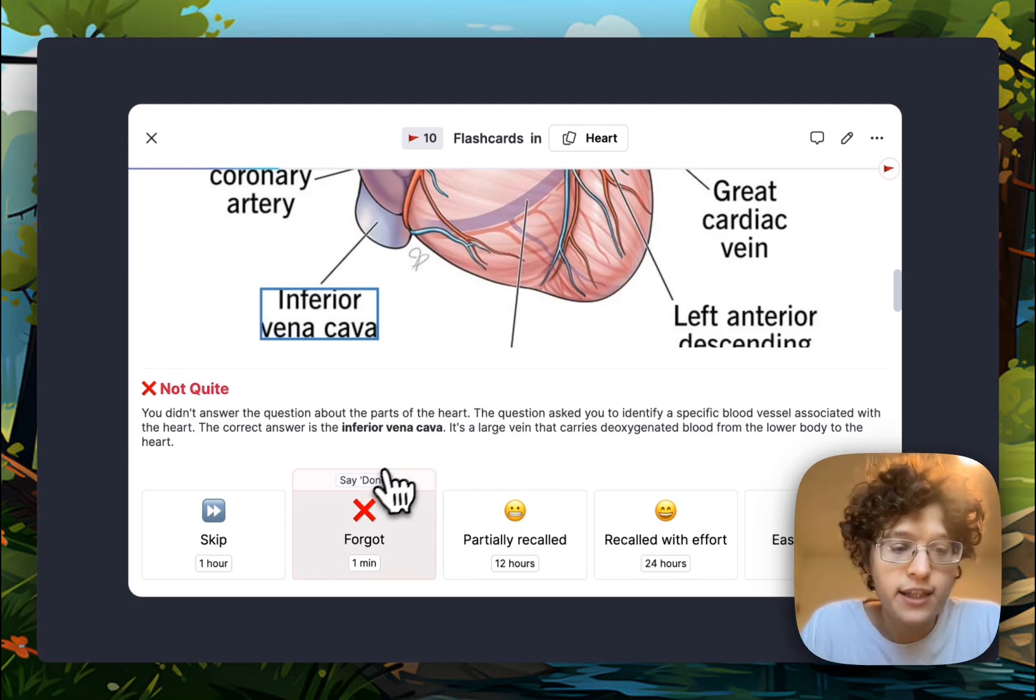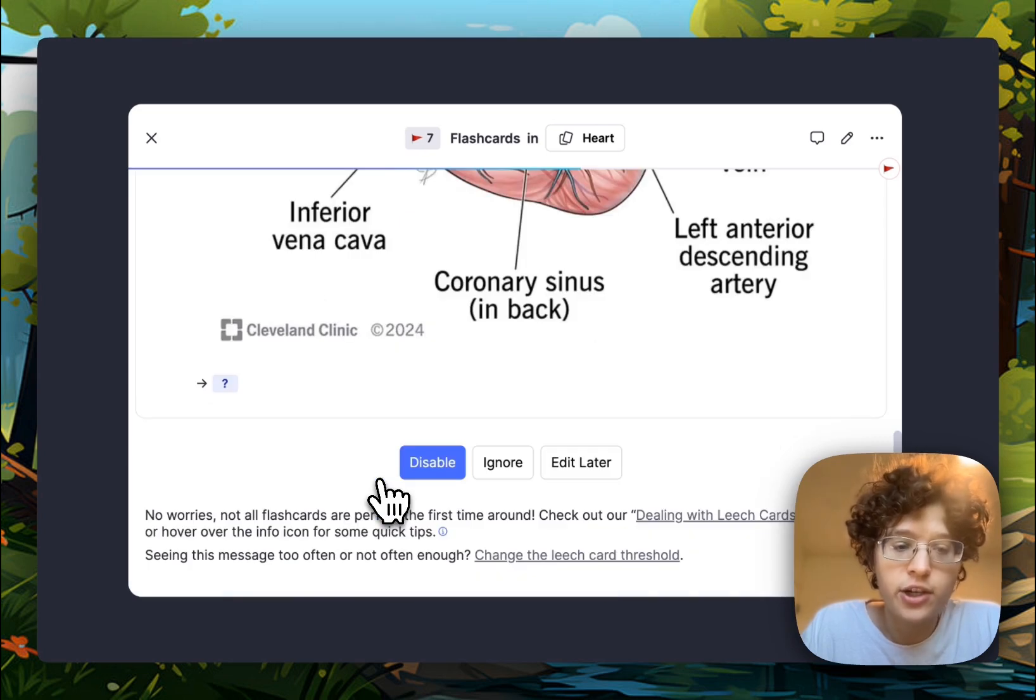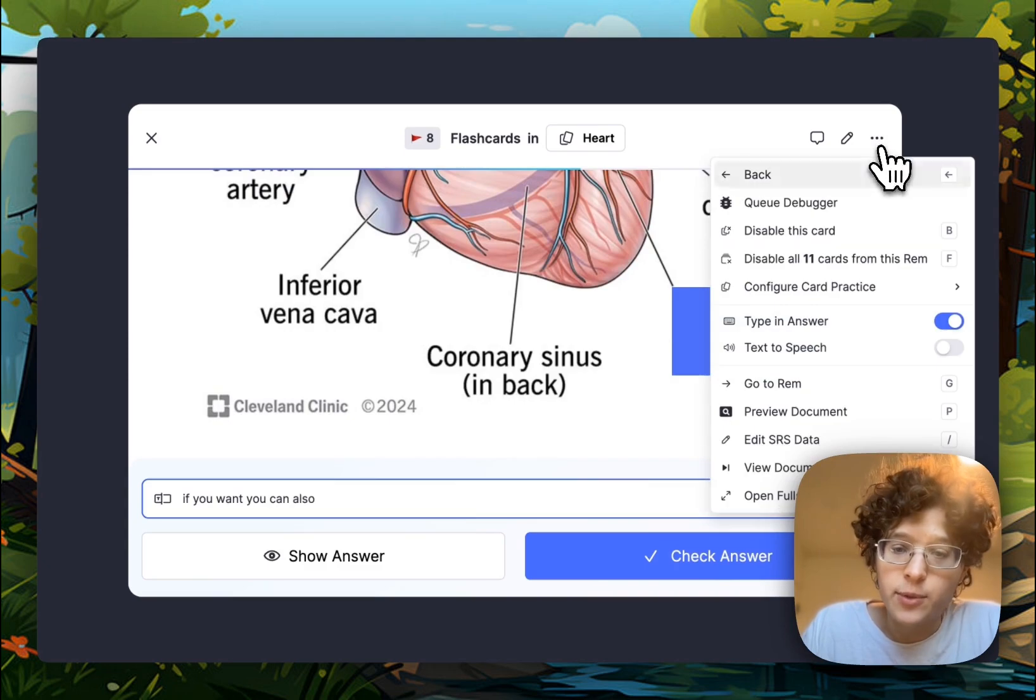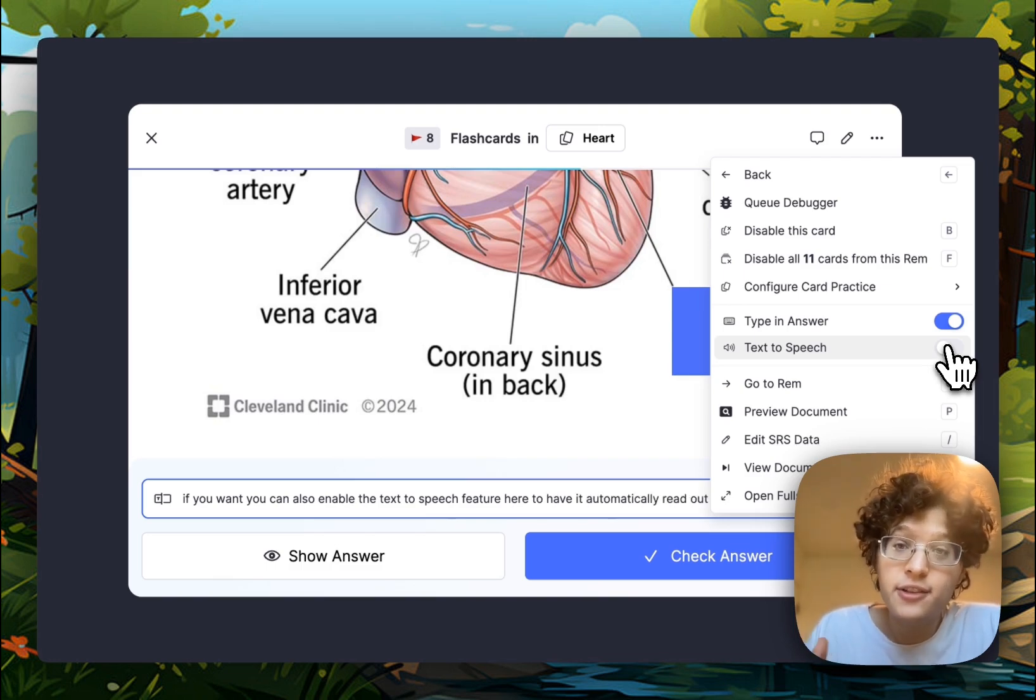I can again just say the word done here and will automatically go to the next card and then just keep on learning. If you want, you can also enable the text-to-speech feature here to have it automatically read out cards to you and then you can just speak them back for a totally hands-free experience. For now, the voice typing only works in Google Chrome, but we're hoping to bring it everywhere soon.